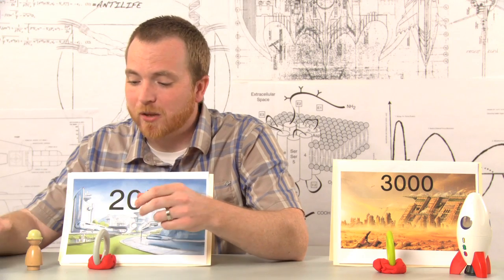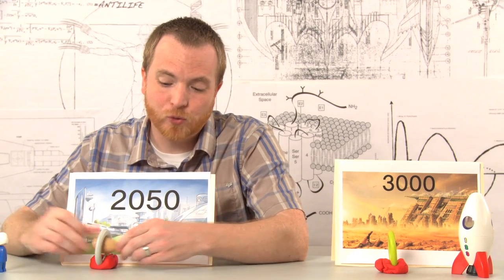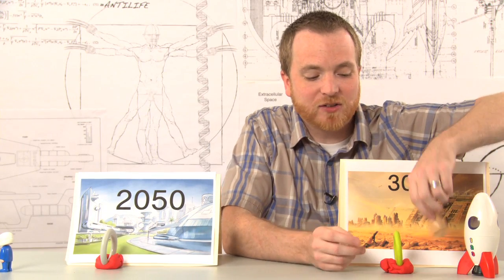So now, Bill and Bob can travel through these portals just as anybody else in these two time eras can and go back and forth between 2050 and 3000.